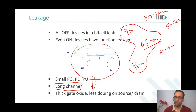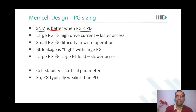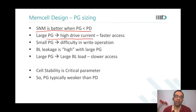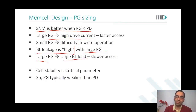These are some empirical numbers. When we want to size the pass gate, SNM is better when the pass gate is smaller than the pull down. A large pass gate means high drive current, but a small pass gate means difficulty in write operation. If the pass gate is large, bitline leakage is also very high, and a large pass gate also means the bitline load is high, so access time degrades.